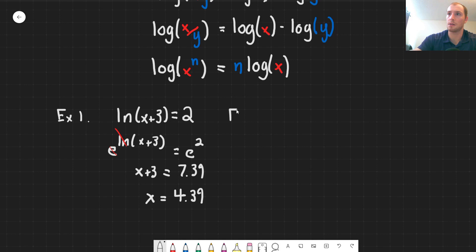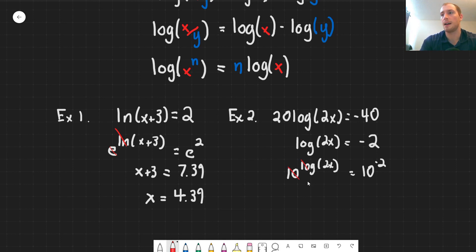Now a second example. Example two. We have 20 log of 2x is equal to negative 40. So first we're going to get rid of this 20. So we're going to divide both sides by 20. So it's going to give us log 2x is equal to negative two. And now we're going to raise both sides to the power of 10. So this is going to give us 10 to the power of log 2x is equal to 10 to the power of negative two. And this is going to cancel out this logarithm with this 10 to the power. And as I said, if the logarithm doesn't have a base, it's assumed to be base 10. So now this leaves us with 2x is equal to 0.01. Now solving for x we're left with 0.005. So that's going to cover it for logarithms here.